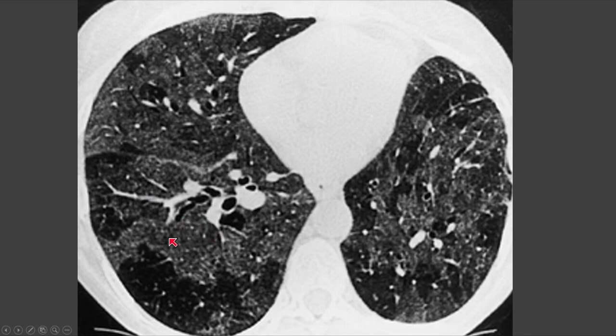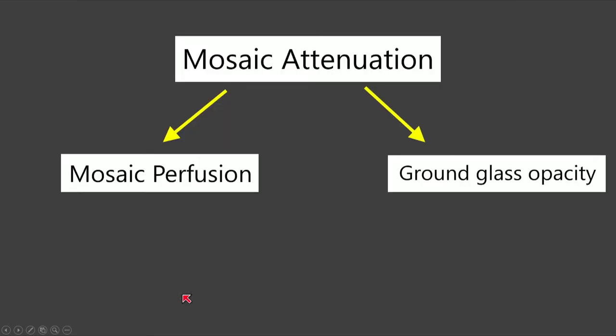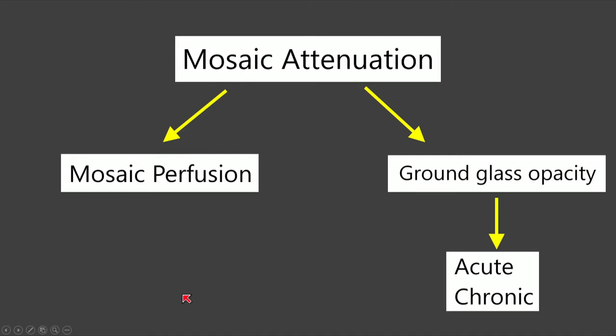The normal lung is the denser lung, and the abnormal lung is the more lucent lung. To recap: mosaic attenuation is a general term; underneath it we can have either mosaic perfusion or ground glass opacity — ground glass opacity being abnormally dense lung, mosaic perfusion being abnormally lucent lung. The causes of ground glass opacity are broad and will be reserved for another talk. Today we'll focus on the causes of mosaic perfusion.